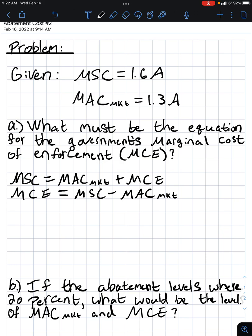We isolated our marginal cost of enforcement. Now we can plug in our values. So we get marginal cost of enforcement equal to 1.6A minus 1.3A. And then we get marginal cost of enforcement equal to 0.3A.